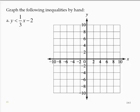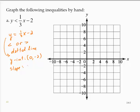So what I'm going to do is graph y equals 1/3x minus 2. But since it was a strict less than inequality, if we have a less than or a greater than inequality, we will use a dotted line. So y equals 1/3x minus 2 has a y-intercept of 0, negative 2, and has a slope of 1/3.